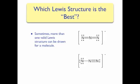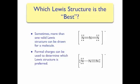Each structure is valid for N3- since it gives each nitrogen atom a full octet. By determining what Lewis structure is best, we're trying to figure out which Lewis structure would best match what we know experimentally about the bond length in the molecule. Formal charges are one way to help us determine which Lewis structure is preferred, or which Lewis structure matches experimental data.